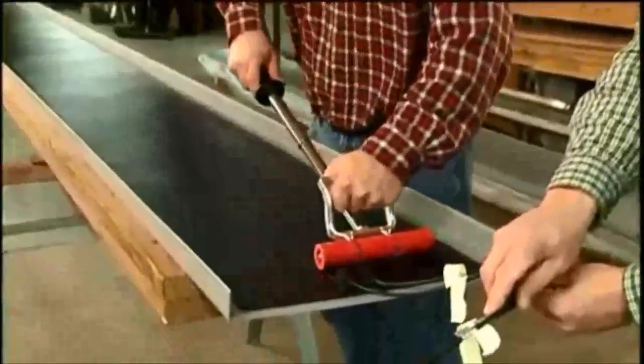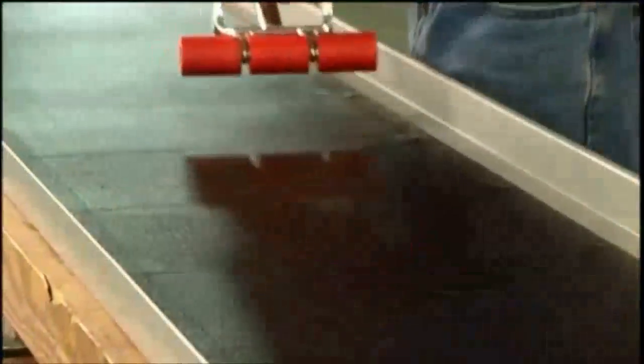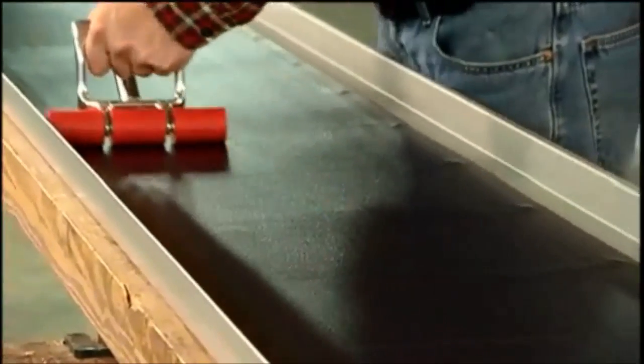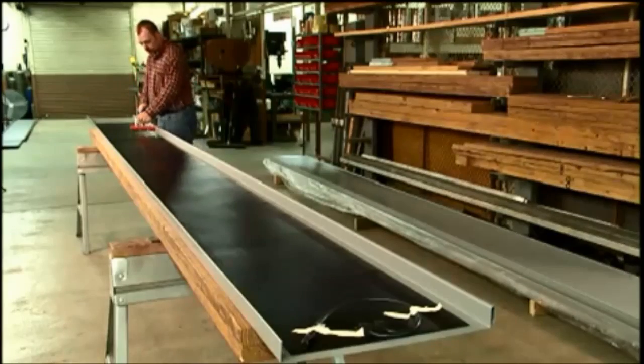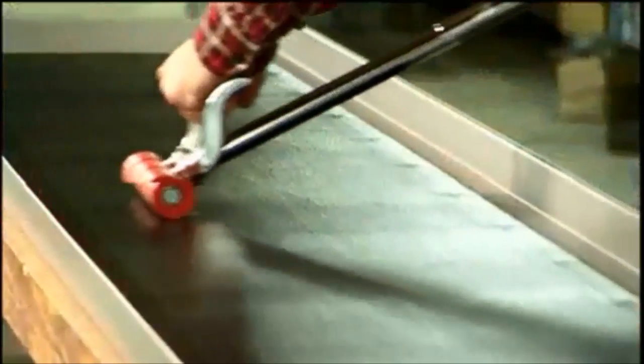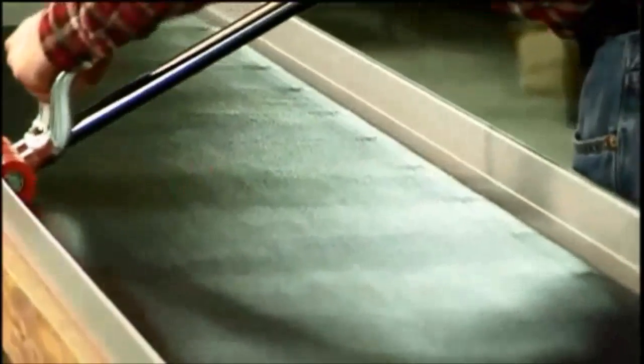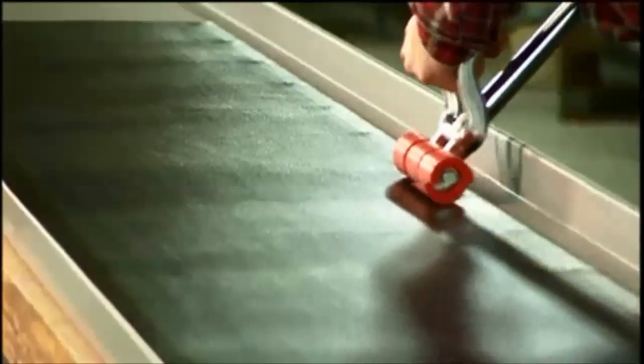The entire laminate must be rolled in both directions, lengthwise and widthwise, using a moderate to heavy pressure on the rolling tool. Ideally, the module should be rolled in the center first and from the center to the edges of the laminate. This is a critical step.